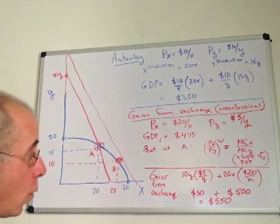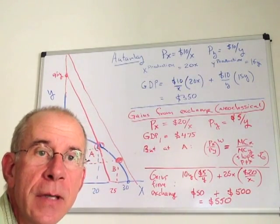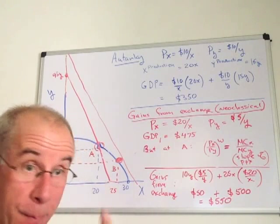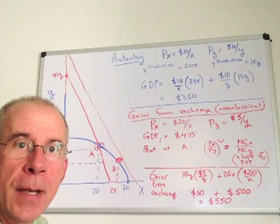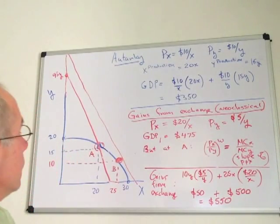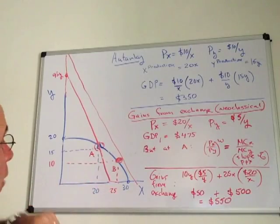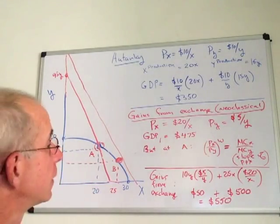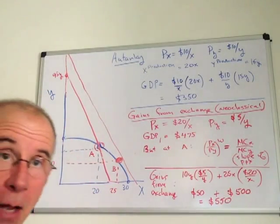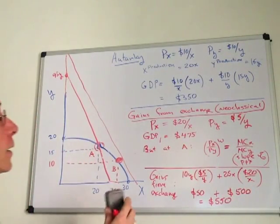So once again, we're going to see that there are gains in terms of GDP from specializing, from changing the combination of goods that are produced. So how much of this good Y can they now consume with this new income? We can take a look at that.